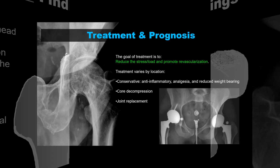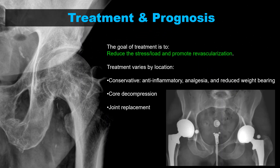The goal of treatment for AVN is to reduce stress and load and to promote revascularization of the bone. Conservative treatments include anti-inflammatory drugs, analgesics, and reduced weight bearing. Surgical options include core decompression — where drilling into the femoral head is performed, with residual screw tracks sometimes visible on imaging — and ultimately joint replacement or total hip arthroplasty.